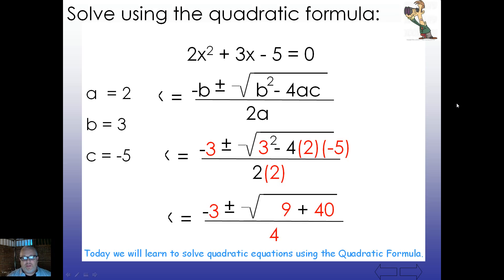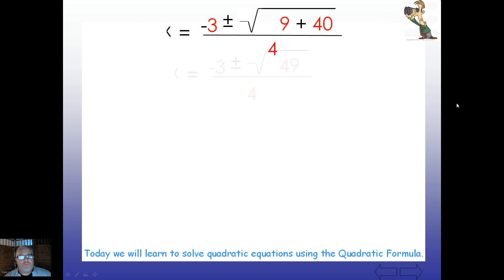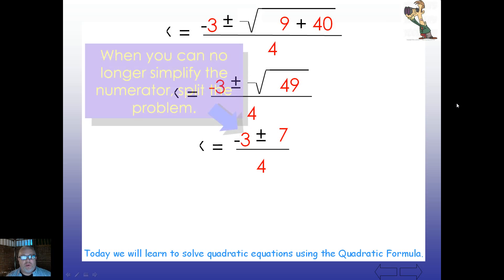Alright, let's clean this up now. So, once we get inside the radical, you've got 9 plus 40. Well, we know that's easy. That's 49. So, that cleans down to a nice, simple problem of negative 3 plus or minus the square root of 49, all that over 4. Now, what is the principal square root of 49? We know that's 7. What's the negative square root of 49? Again, that is going to be negative 7.